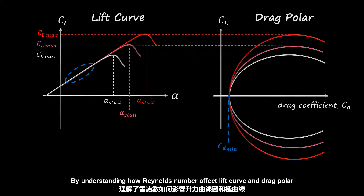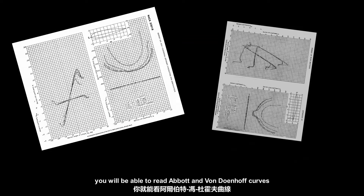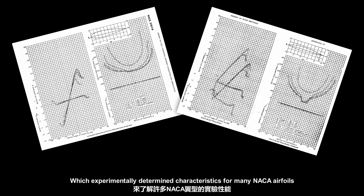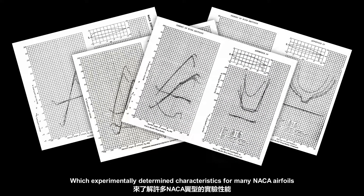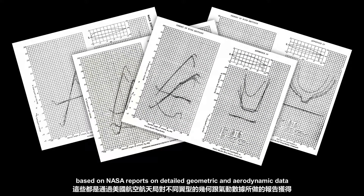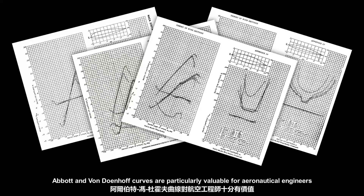By understanding how Reynolds number affects the lift curve and drag polar, you will be able to read Abbott and Von Doenhoff curves, which experimentally determine characteristics for many NACA airfoils based on NASA reports on detailed geometric and aerodynamic data. Abbott and Von Doenhoff curves are particularly valuable for aeronautical engineers.